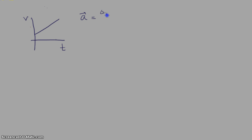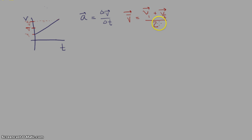Some key details: acceleration is the slope of the velocity versus time graph — that's rise over run. We also have v-initial, how fast the object is going at the beginning, and v-final at the end. At the halfway point between v-initial and v-final, that's the average velocity. One way to find it is (v_i + v_f) / 2, and that is only true when acceleration is constant.